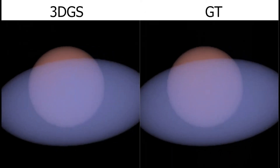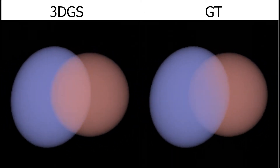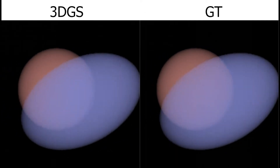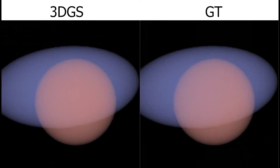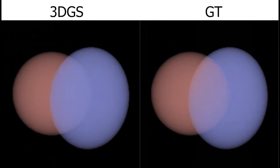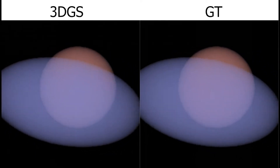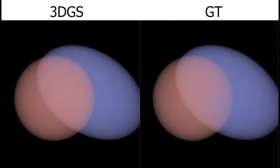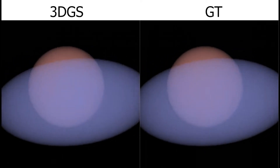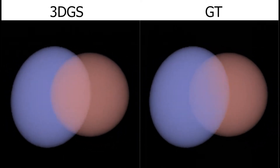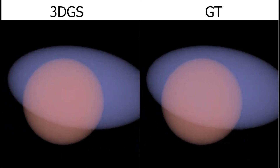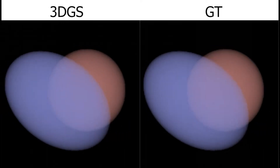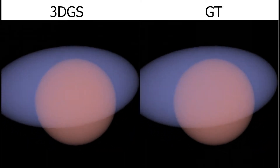But first, what is popping, and why does 3D Gaussian splatting suffer from it? Here, we have a simple example of a camera rotating around two primitives, which are ellipsoids for the sake of illustration. On the left, the primitives are sorted once per camera. On the right, the primitives are rendered using numerical quadrature.